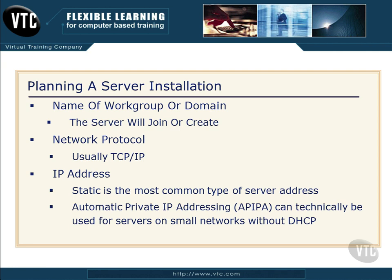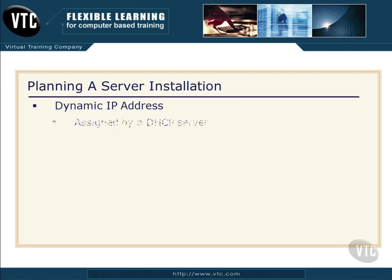Watch this one on the exam. Automatic private IP addressing — APIPA — can technically be used for servers. Now if you're on a really small network without DHCP, I'm not sure why you're using a server, but watch for this trick question on the exam. You can use that 169.254 address on a server. It's rare and usually indicates a network problem, but just know that it can happen and don't let them trip you up.